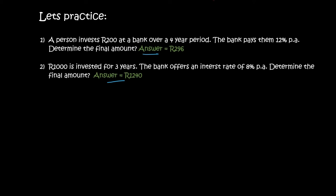Alright, so for number one, it says a person invests 200 Rand at a bank over a four-year period. The bank pays them 12%. Determine the final amount. Okay, well, we know that there's now this handy formula that we use, where P is always your starting amount.